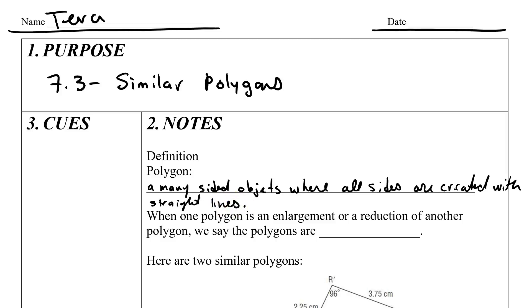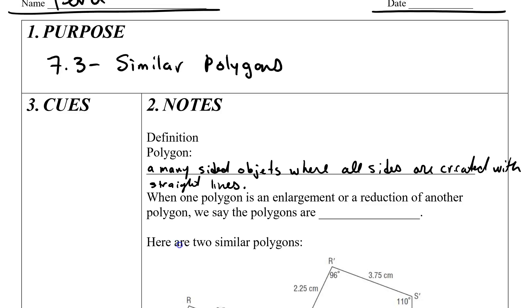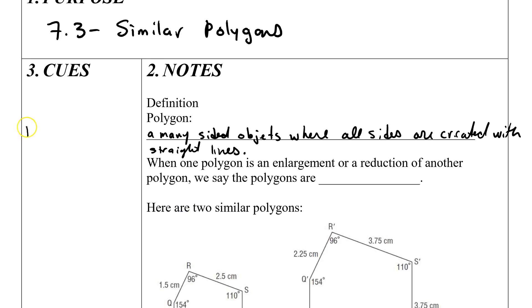Now we have specific names for special polygons. For example, we have a triangle, three sides. We have a quadrilateral, which is four sides. We have a pentagon, which is five sides, etc.